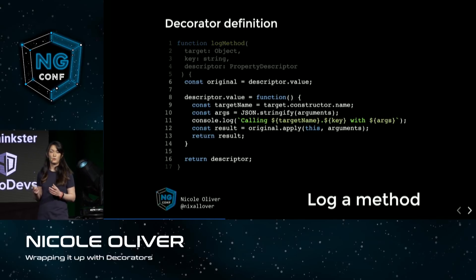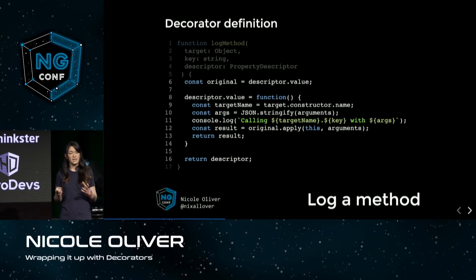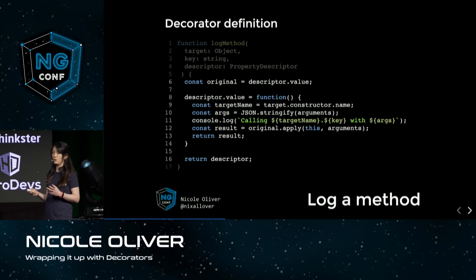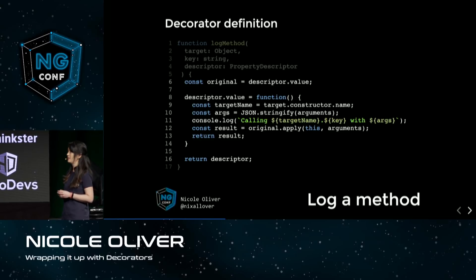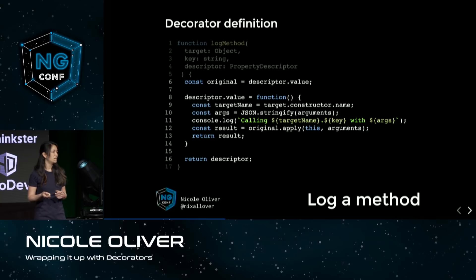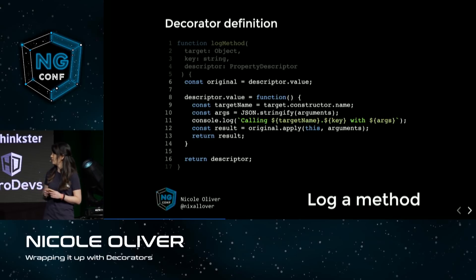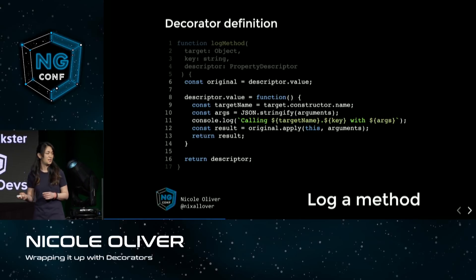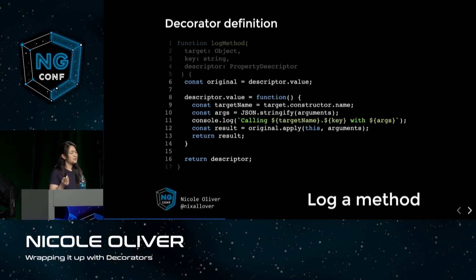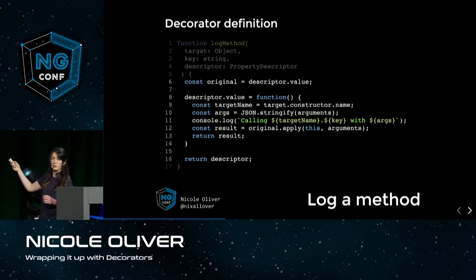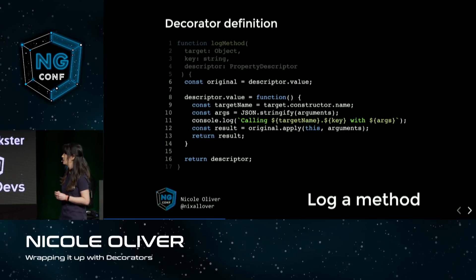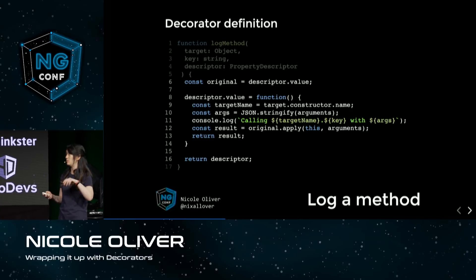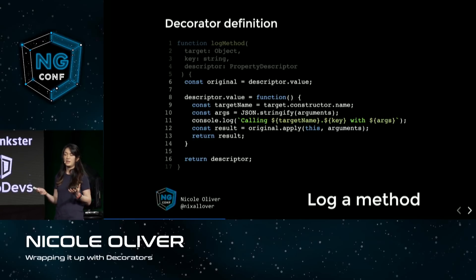In the body of our decorator, the first thing we do is store our original method. Then we replace it with a wrapper function that takes note of the name of the class and stringifies the arguments, and calls console.log to say 'calling planet.greet' with our argument map. Finally, we call our original method using apply to apply the arguments, return the result, and return the descriptor. This wrapper pattern is actually very common for method decorators — it's how you'd create a timing, throttle, or debounce decorator.